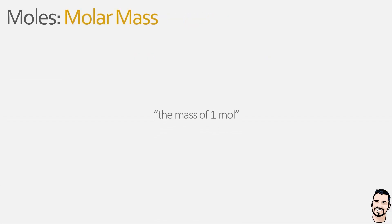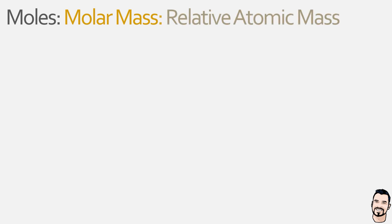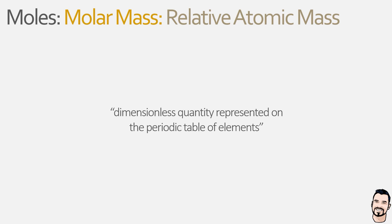In plain and simple terms, the molar mass is the mass of one mole of that substance. The interesting thing about the molar mass is that it is directly proportional to its relative atomic mass, which begs the question: what is the relative atomic mass? It is a dimensionless quantity represented on the periodic table of elements, with each element having its own unique value. The relationship between molar mass and relative atomic mass enables us to determine the mass of any given number of moles for that substance.